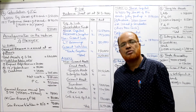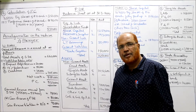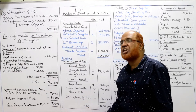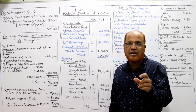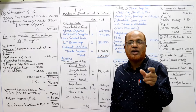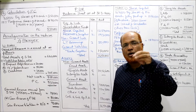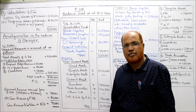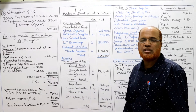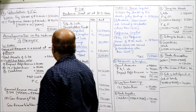General reserve from S Limited = ₹18,000. General reserve of P Limited = ₹80,000. Therefore total general reserve to be shown in the balance sheet = ₹98,000. This ₹98,000 includes both P Limited's general reserve and the general reserve arrived at from S Limited.